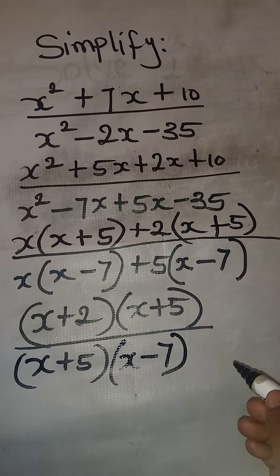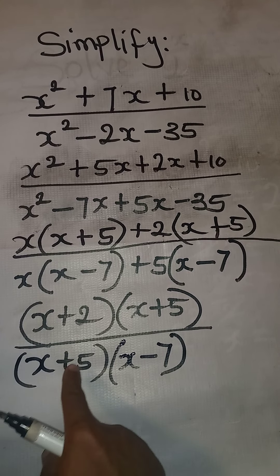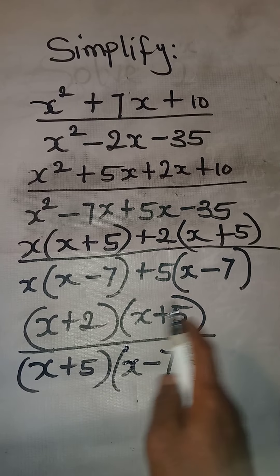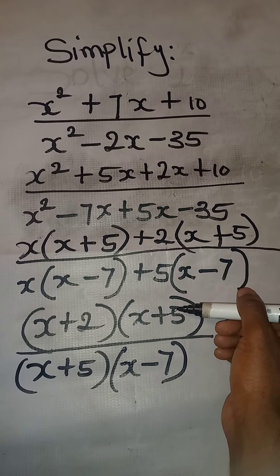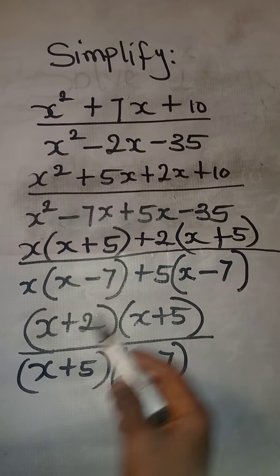This has been simplified to some extent. But the next thing now is for us to get the common terms, the common factors. We have x plus 5 and x plus 5 on the two sides of the fraction.